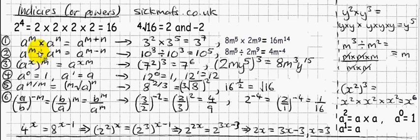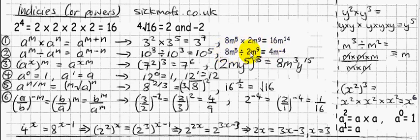If you're dividing, that's the opposite of multiplying, so instead of adding the powers we subtract them. So 10 to the power 8 divided by 10 cubed — 10 cubed means 10 to the power 3 — you just take away the powers: 8 take away 3 is 5. Similarly, 5 take away 9 is minus 4, and 8 divided by 2 is 4 for the normal numbers.